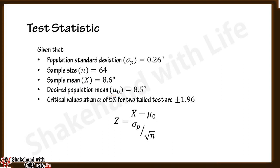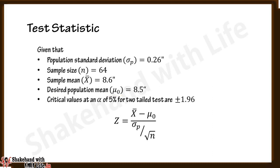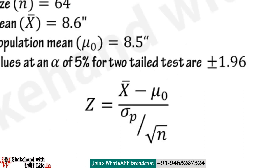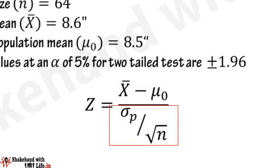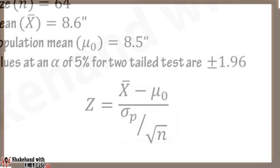The critical values at an alpha of 5% for the two-tailed test are ±1.96. You can choose the Z-test as the test statistic, considering the population is normally distributed. The equation of the Z statistic is: Z = (x̄ − μ₀) divided by (σₚ divided by the square root of n).